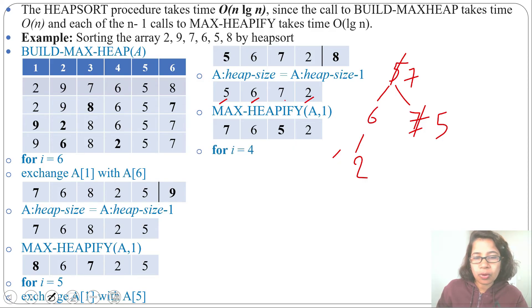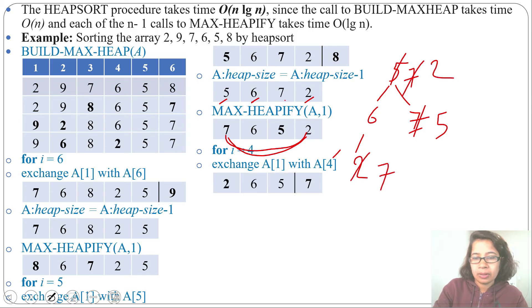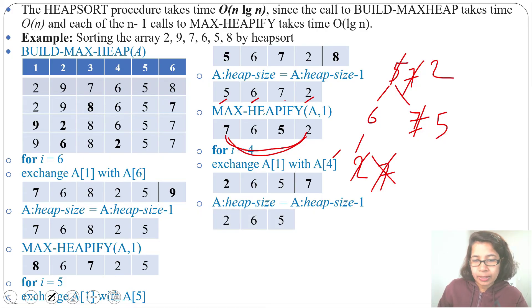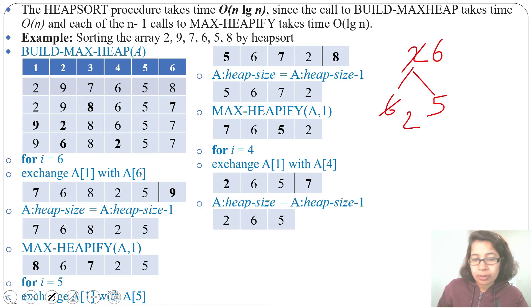For i equals 4, we exchange A[1] with A[4] — the root with the last element. So 2 comes to the root position and 7 goes to the last position. After that we delete the last element (7) by decreasing the heap size. We now have the array [2, 6, 5]. We call MaxHeapify on A[1]: 2's children are 6 and 5; 6 is the largest, so we swap 6 and 2. After MaxHeapify we get [6, 2, 5].